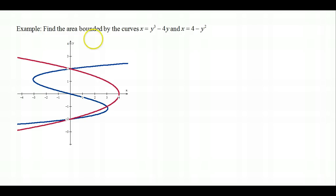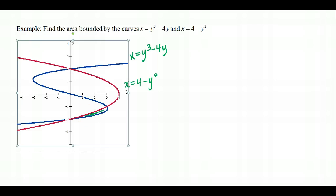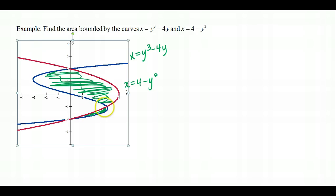Example 2: find the area bounded by x = y³ − 4y and x = 4 − y². Given the graph: the parabola opening to the left corresponds to x = 4 − y² (red), and the blue curve corresponds to x = y³ − 4y. Since both functions are in terms of y, we think right minus left. The problem is that the right and left functions switch places across the region.